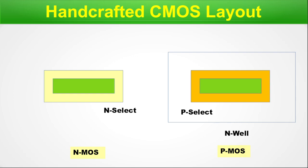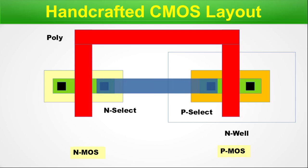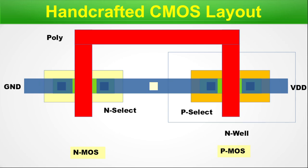On the NMOS side we have N-select, then diffusion, and here we make the source and drain contacts. Similarly for NMOS we do the source and drain contacts. Here we have the poly gate and connect source and drain — this will go to VDD and this will go down. From here we take the output; the input is our gate. This is a very simple CMOS layout, and this is how each standard cell layout is handcrafted step by step.